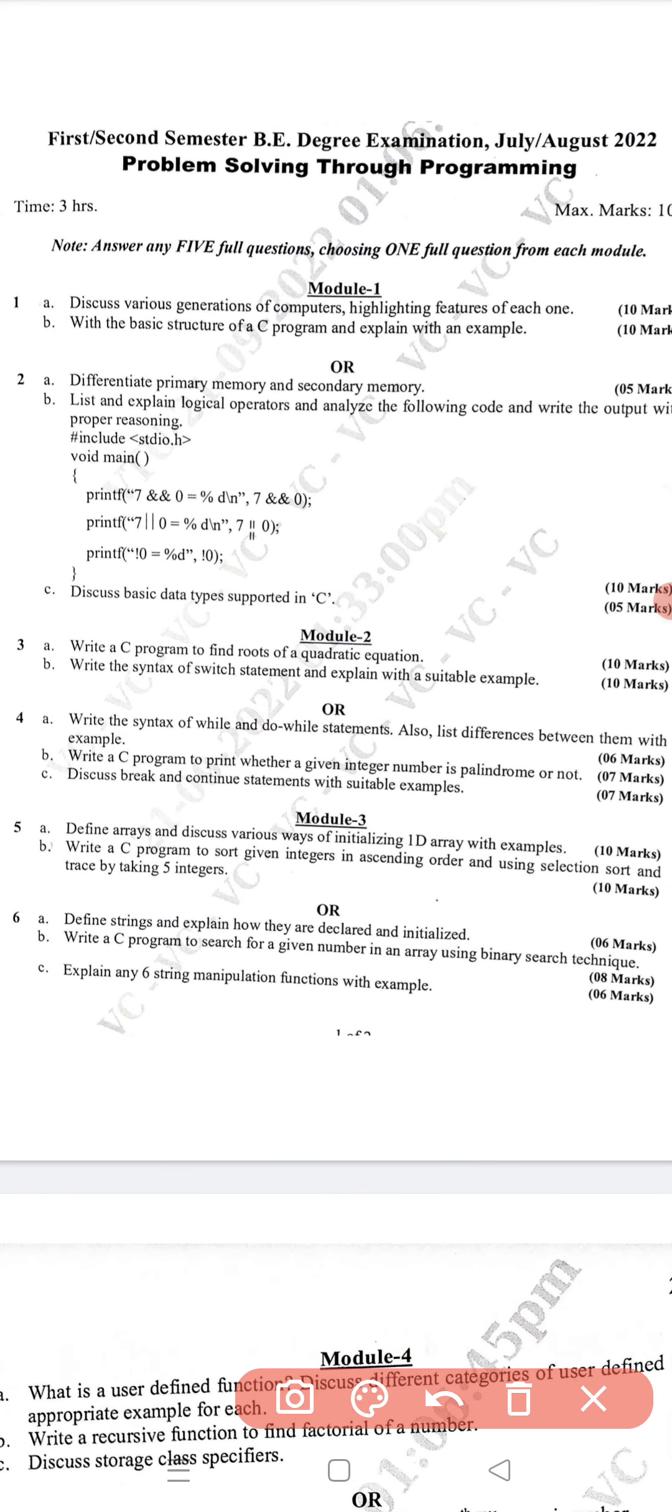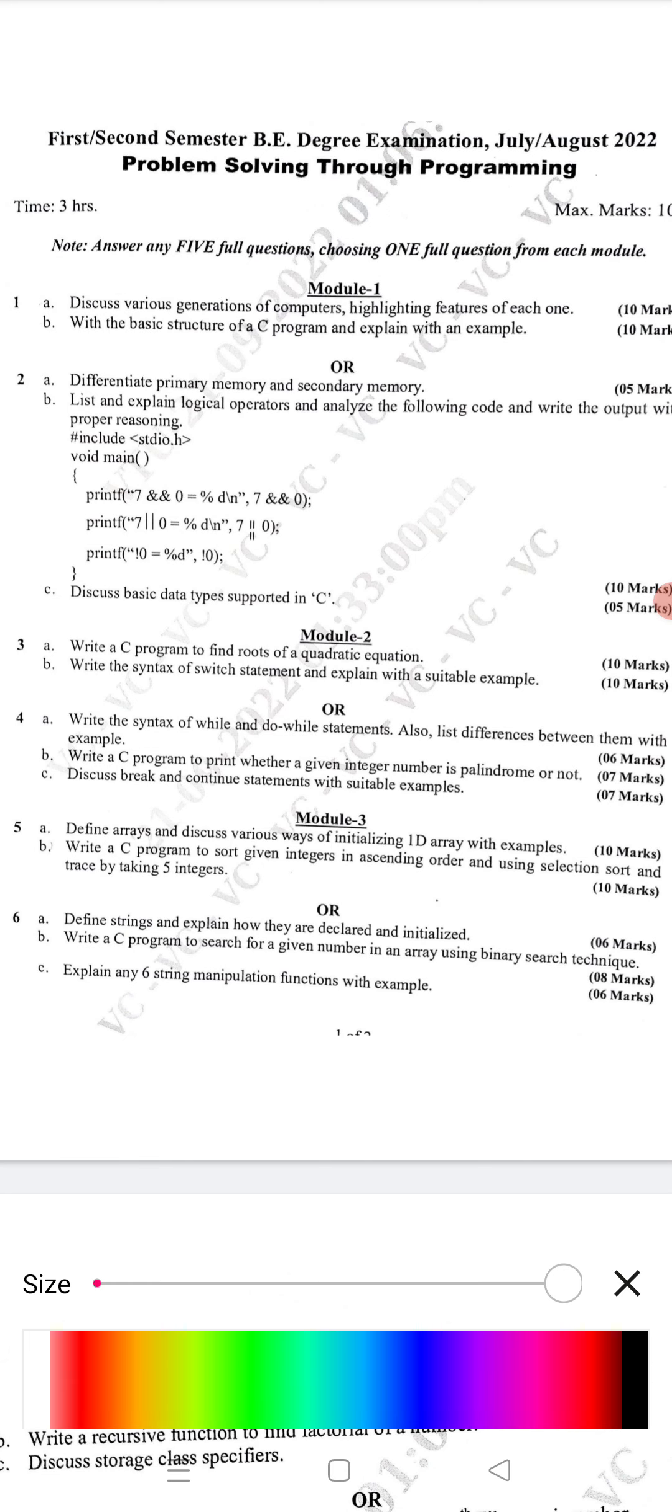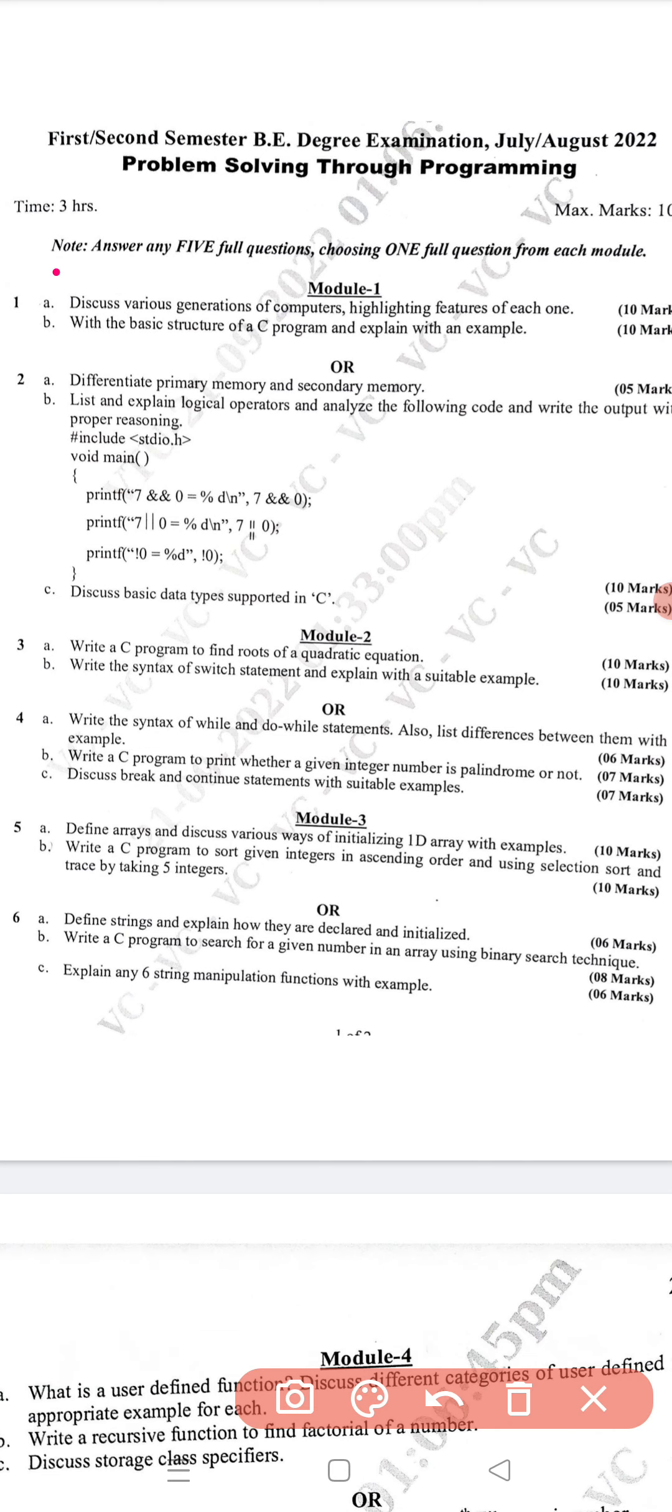I will start with the first question. First question A we have guessed it, so 10 marks. Second A we have guessed it, only 5 marks is there so I will not include that. From first and second we have guessed only 10.